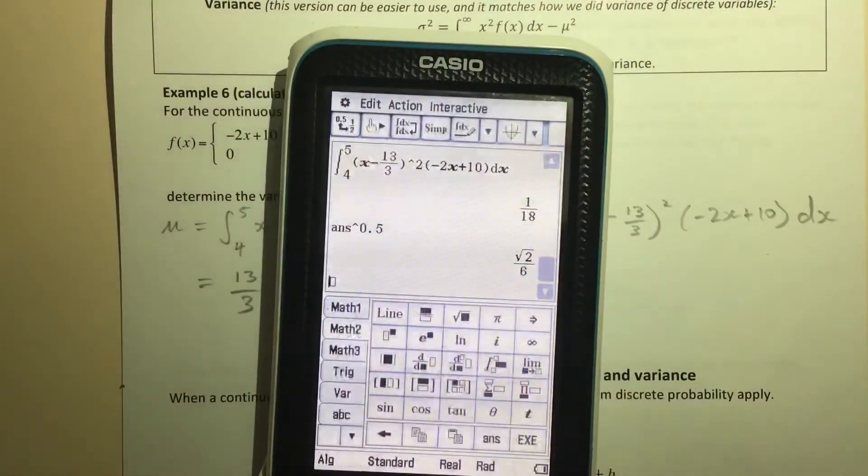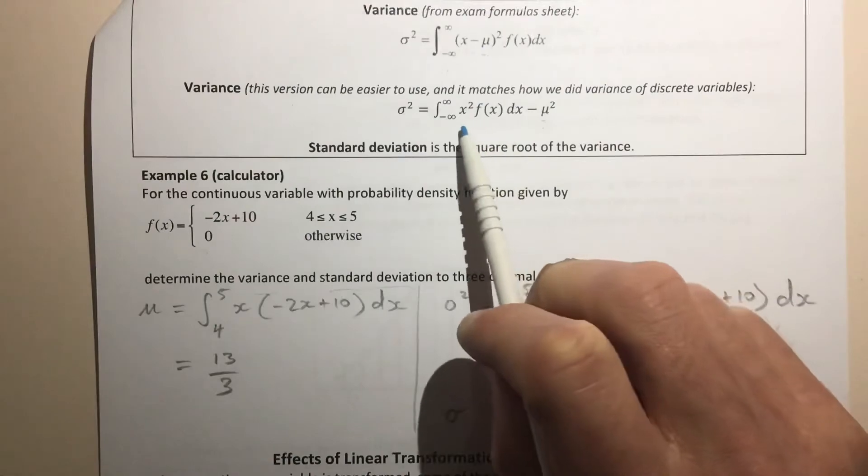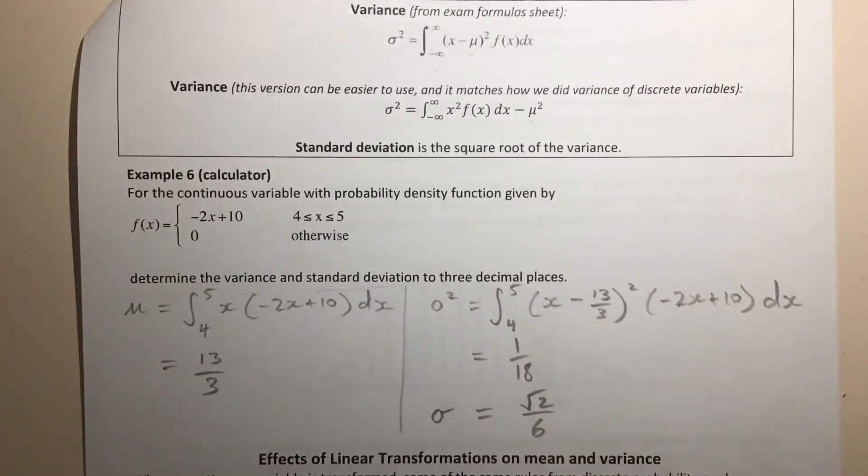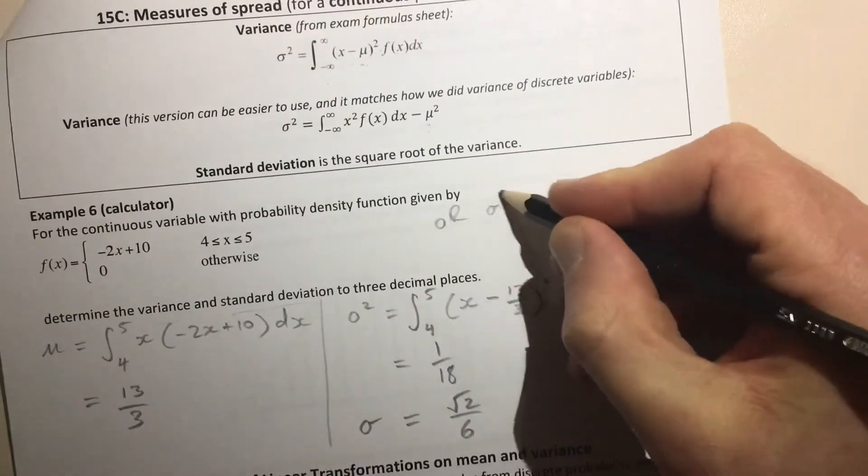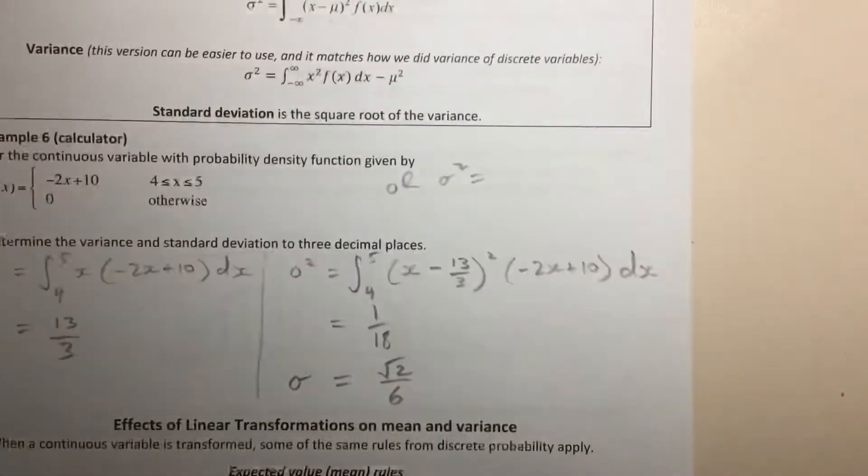And just as promised, like we said, you can also use this alternative version of the formula, this one here. If we were going to use that one, then we would have had, let's quickly scribble it out here, σ² would have equaled, in this example,